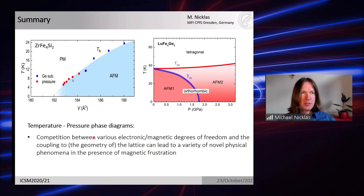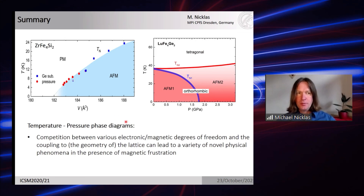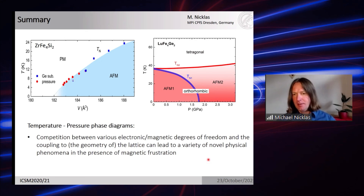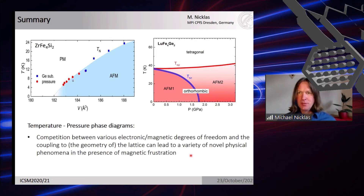In summary, I showed two examples where geometric frustration plays an important role in the pressure-temperature phase diagrams. This suggests two new compounds worth further investigation. Thank you very much for your attention.